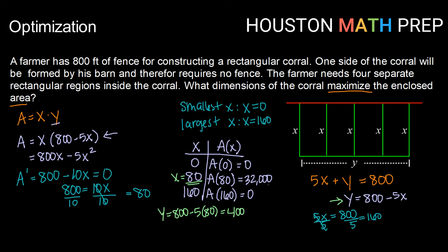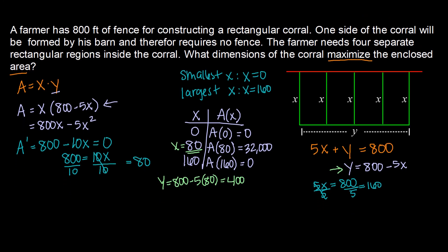All right, so we want to end by writing down a conclusion statement that fully answers the question. So the dimensions that create a maximum area are 80 feet by 400 feet.